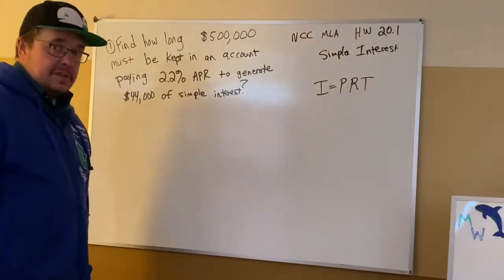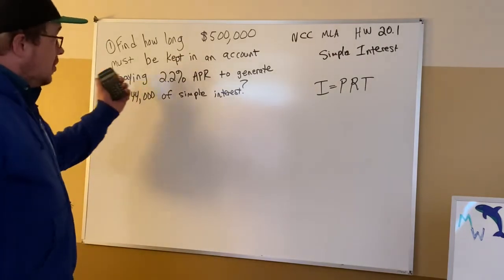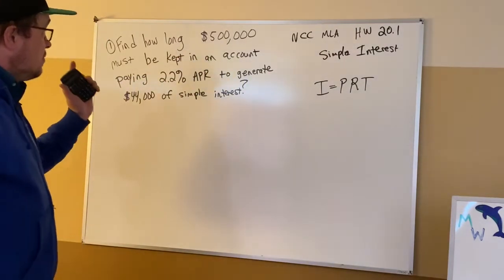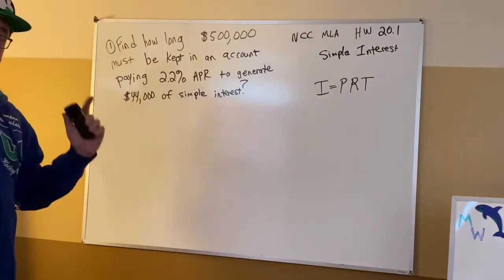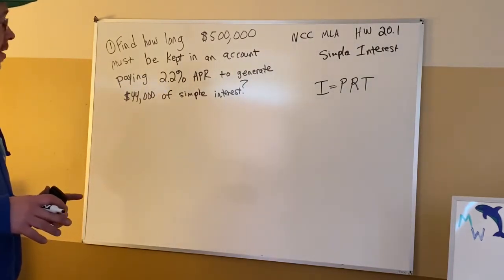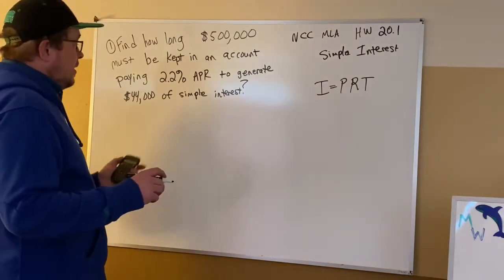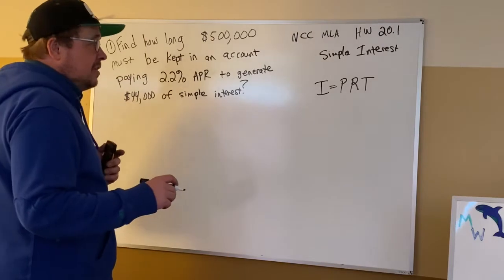We're going to look at simple interest, and what's happening here is we're going to take an example where the one thing we're looking for is not actually going to be our amount of simple interest. Instead, let's find the amount of time, so we need to find time.